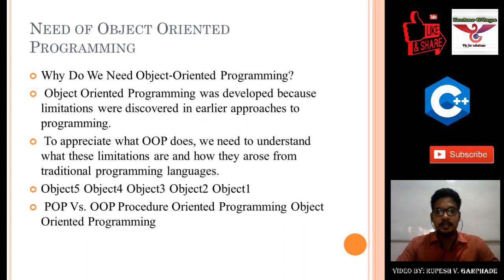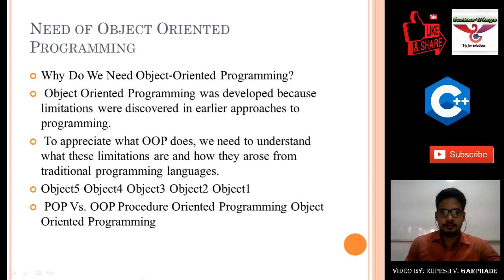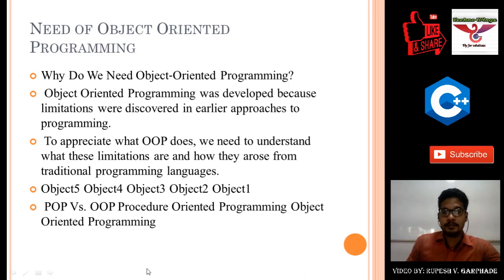Object oriented programming was developed because limitations were discovered in earlier procedure oriented programming. In procedure oriented programming there are some problems or limitations. Those limitations have to be covered or solved by using object oriented programming — some drawbacks in C programming have to be covered in OOP. To appreciate what OOP does, we need to understand what these limitations are and how they arose from traditional programming languages.